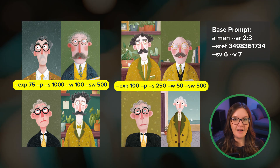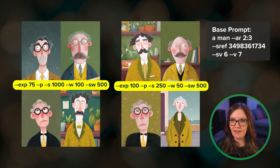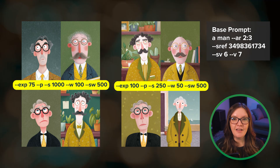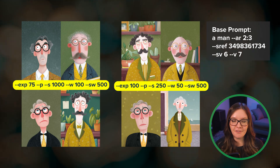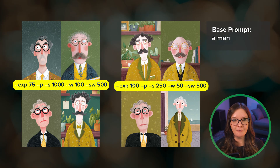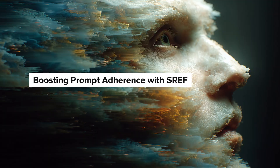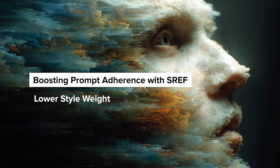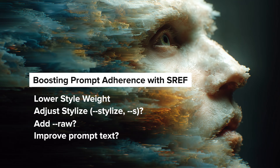Using your personalization profile alongside an sref creates another layer of customization. In these examples I've added my v7 global personalization maxed out at stylize 1000 but with different style weights. When the style weight is lower it gives my personalization more room to influence things like the shade of green and the background details. It's all about finding the right balance between style control and prompt adherence. There's no perfect formula — it really depends on what you're trying to achieve. If prompt adherence is really important and your current results aren't matching your vision, start by lowering the style weight, then consider whether you need to adjust stylize, add raw mode, or modify other parameters or prompt text.